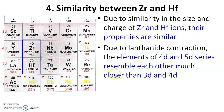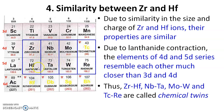Due to lanthanide contraction, the elements of the 4d and 5d series resemble each other much more closely than the 3d and 4d series elements do. Therefore, zirconium–hafnium, niobium–tantalum, molybdenum–tungsten, and technetium–rhenium are all called chemical twins.